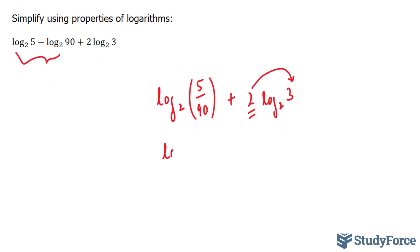So we end up with log base 2, 5 over 90. I haven't changed this part yet. We'll do that later. Plus log base 2, 3 to the power of 2 is 9. Now that we've simplified this expression to two terms, we can now use the product rule. And the product rule says that if you have two logs that are being added, you can combine this part and this part together.